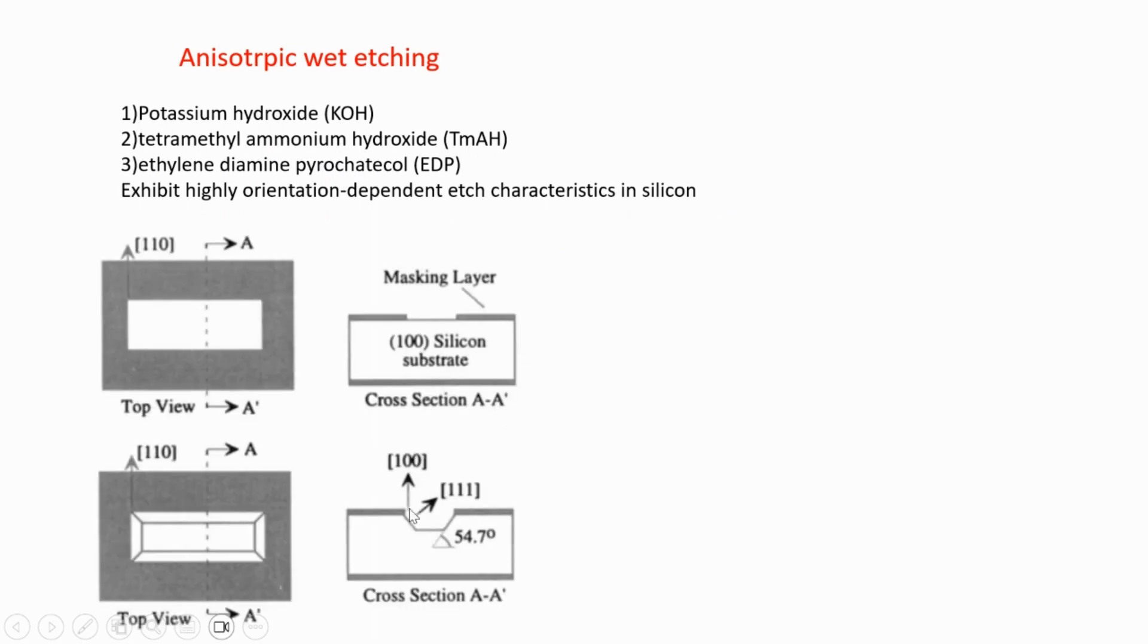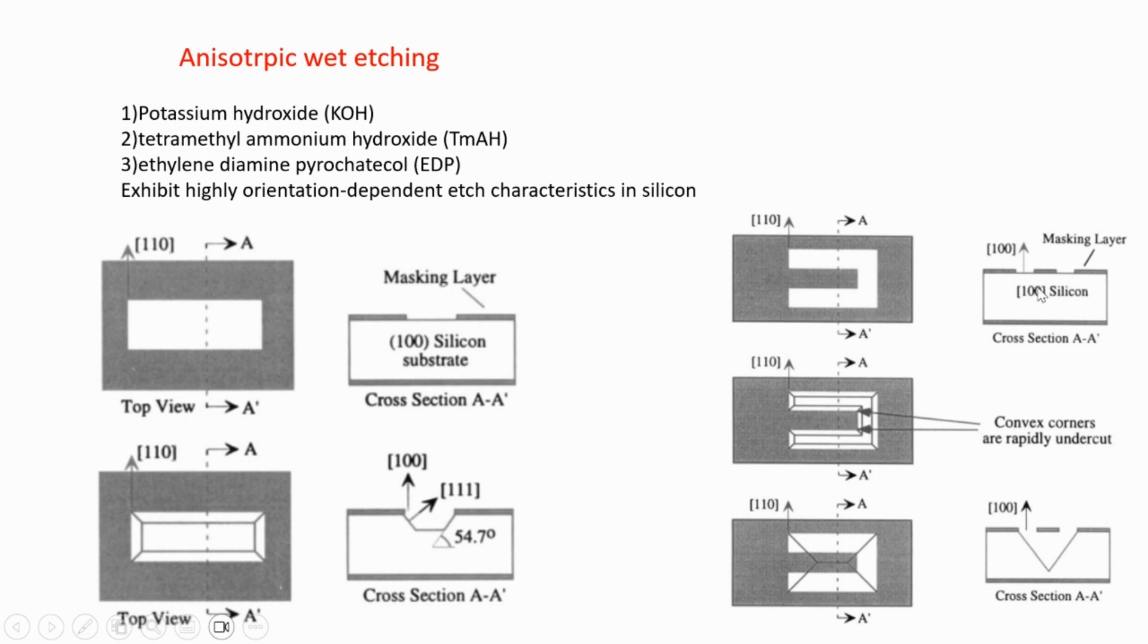The 100 plane etches much faster than 111, so you get port structures like this. You can use a mask layer and get these beautiful structures because of this orientation dependency. You can also create hanging beams. If you want a V structure, you can make a mask shape like this and get a V structure. Basically, you're etching the part which is under the mask also.